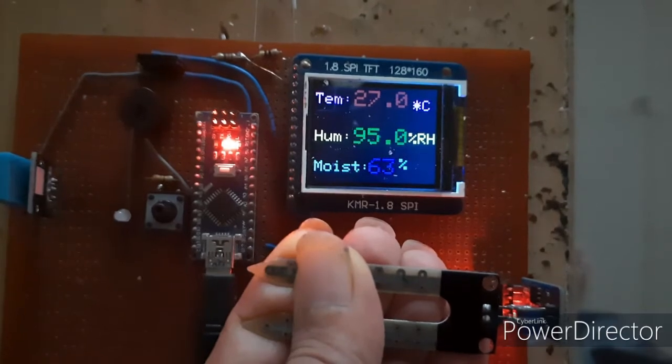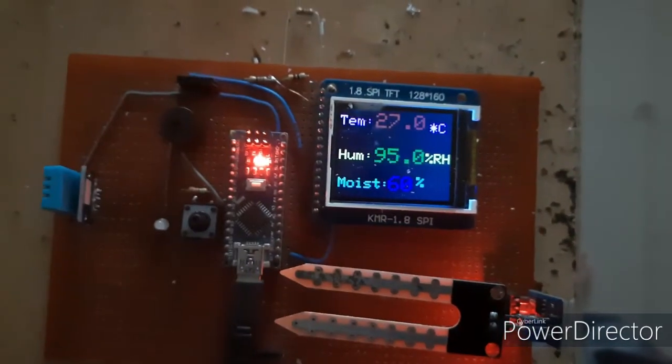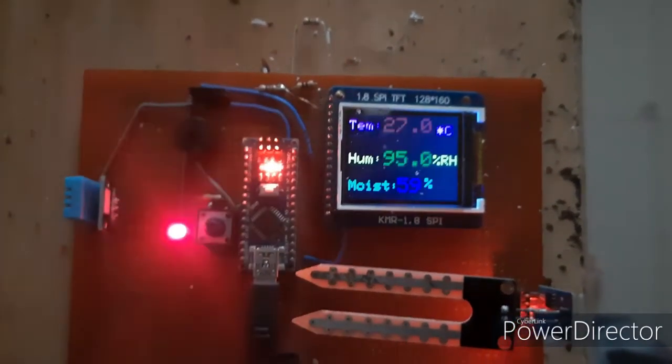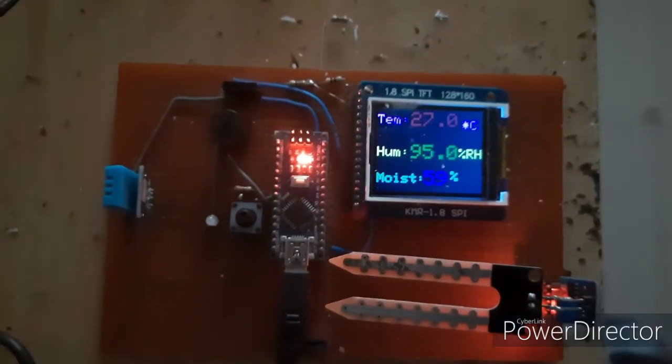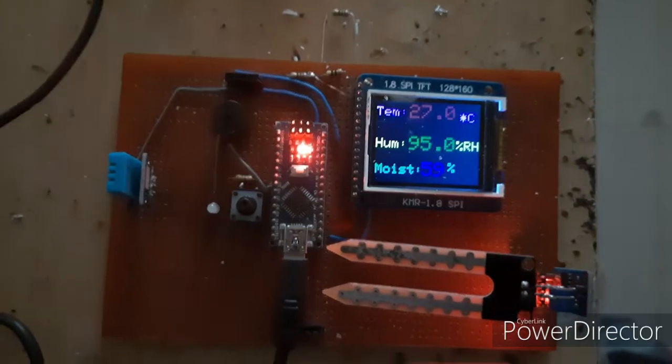It is measuring soil moisture level. Now, let us see the temperature. It is accurately calibrated. I am going to increase the temperature with the help of soldering iron.